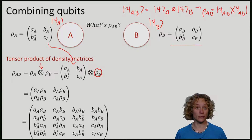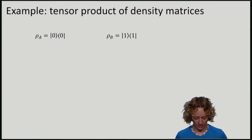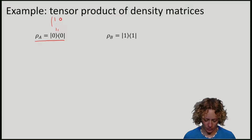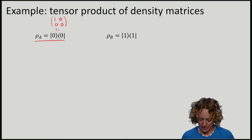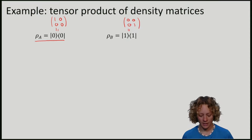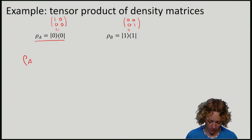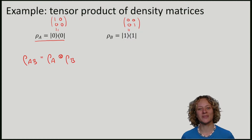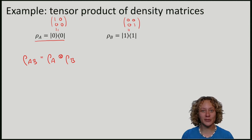To understand this tensor product of density matrices, let's now consider a simple example. The density matrix of A is just the zero state, which as we've computed before, as a matrix looks like [1, 0; 0, 0]. And the density matrix for |1⟩, which we've also computed before, is [0, 0; 0, 1]. So if I now want to compute the density matrix of rho AB together for both qubits, I take rho A and tensor it with rho B.